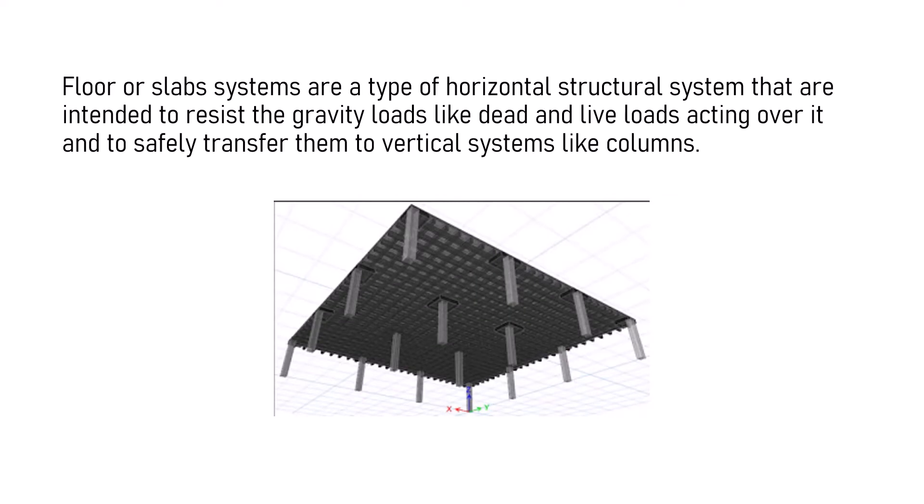Floor or slab systems are a type of horizontal structural system that are intended to resist the gravity loads like dead and live loads acting over it, and to safely transfer them to the vertical systems like columns.